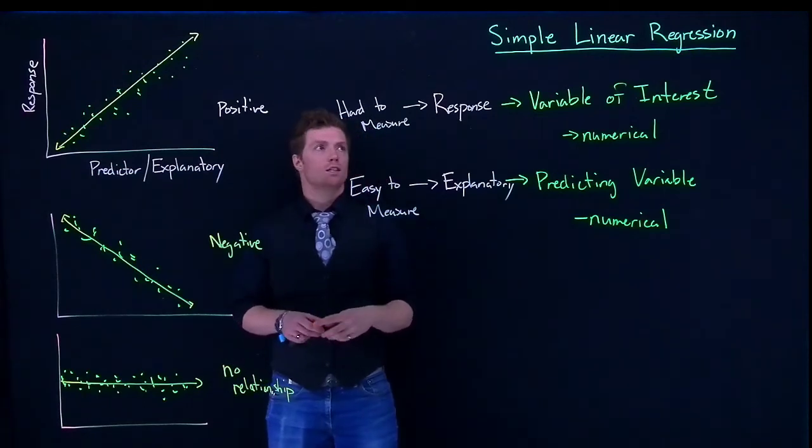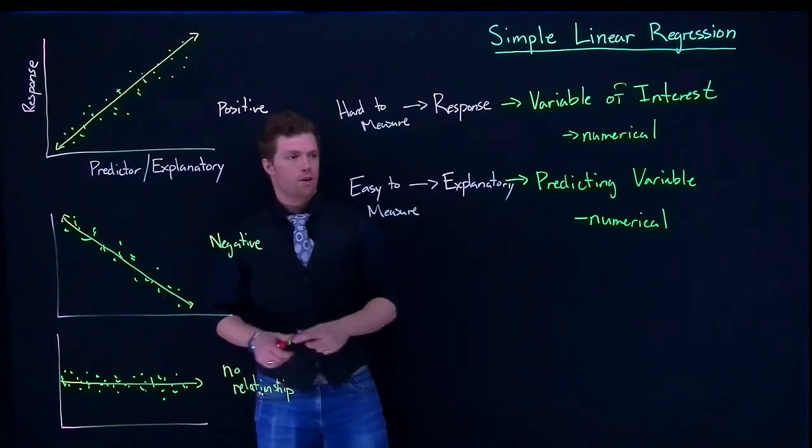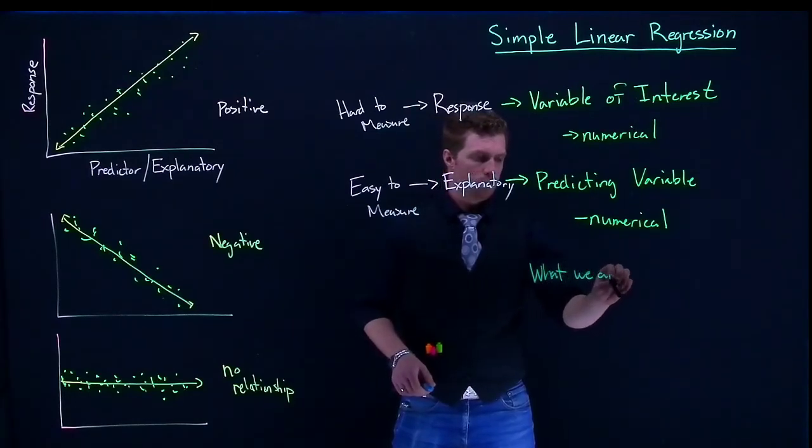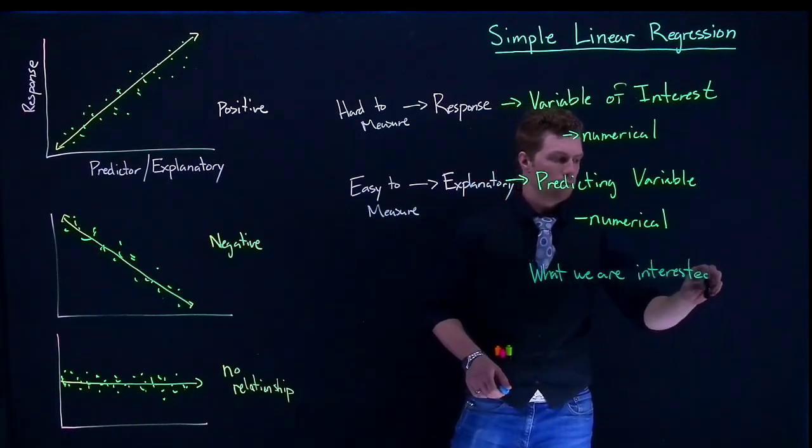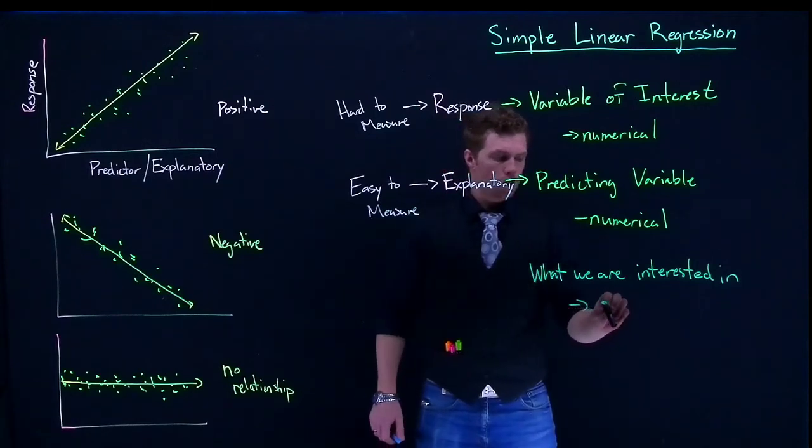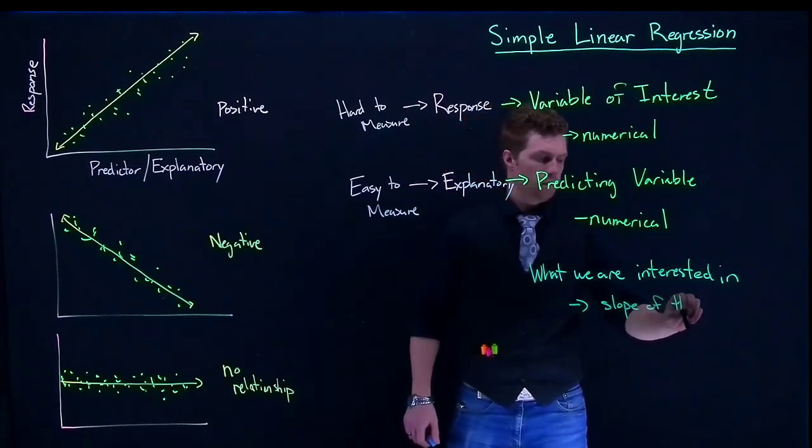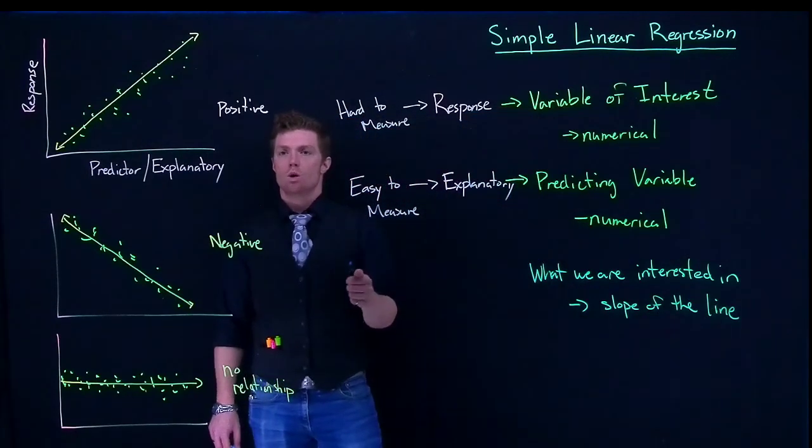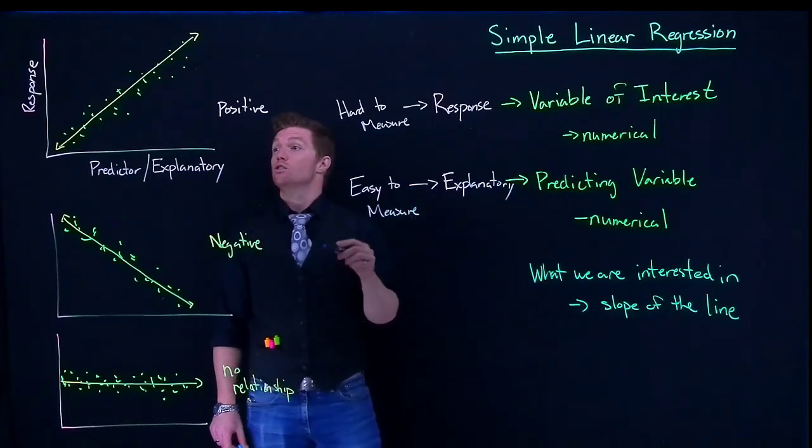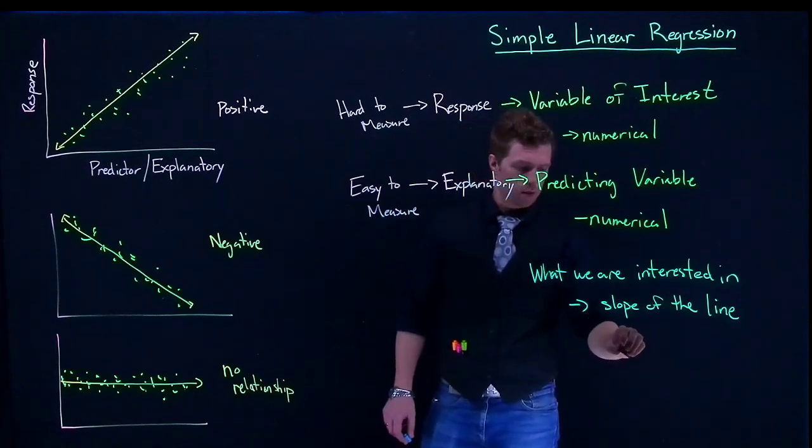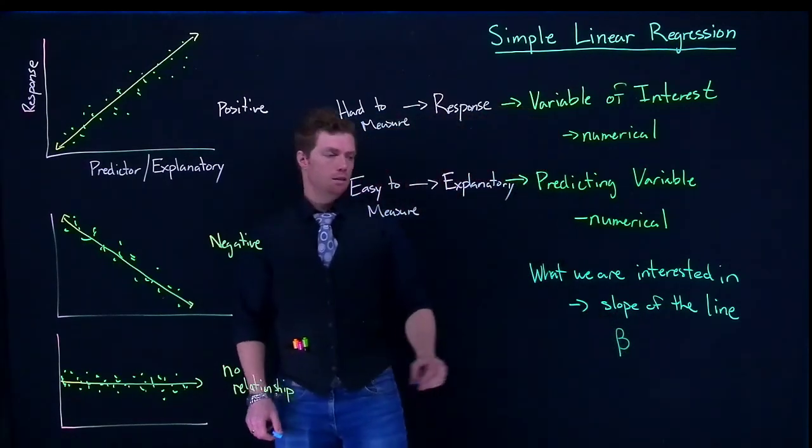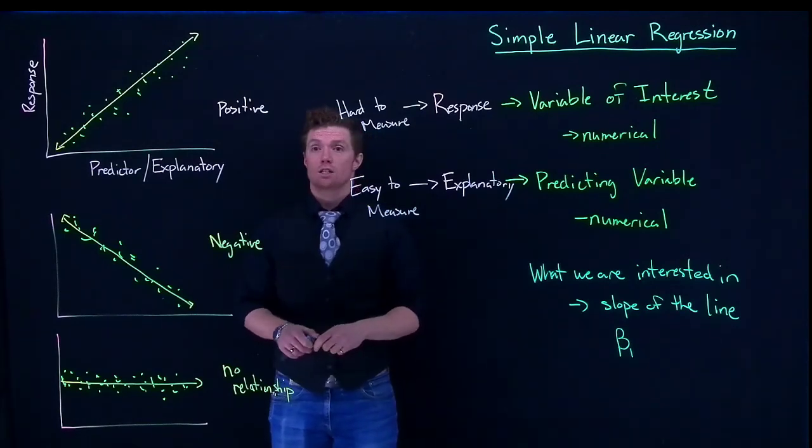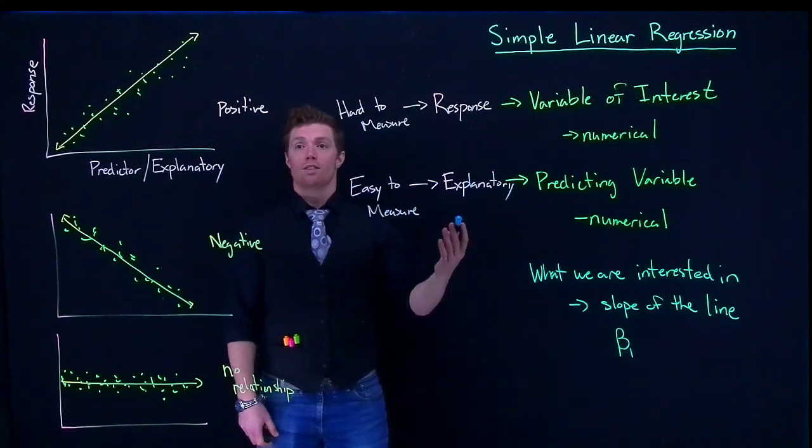So when we're doing this regression analysis, what we are actually interested in is the slope of the line. Previously we were thinking about things like means or proportions. Now what we're interested in is this true slope, or new Greek letter, is beta. And it's specifically beta 1, or the slope of our line. So that's kind of an introduction into what we are actually doing when we are using the analysis method of simple linear regression.